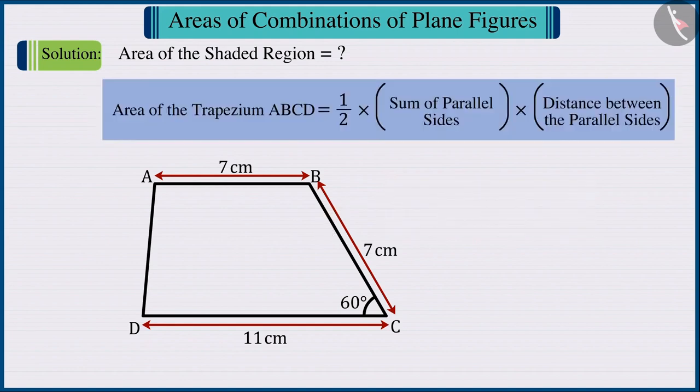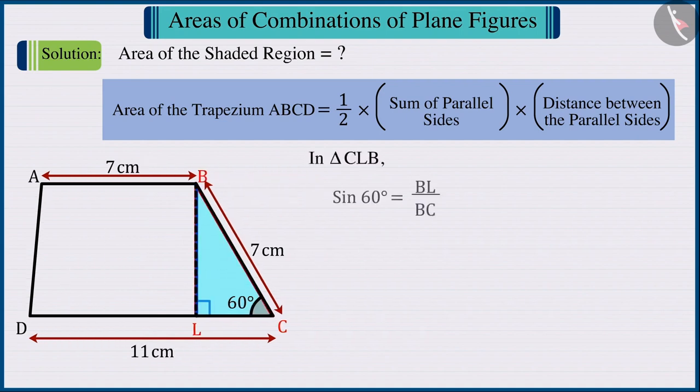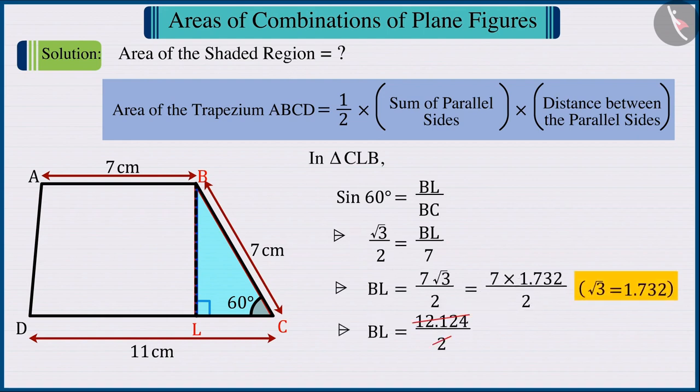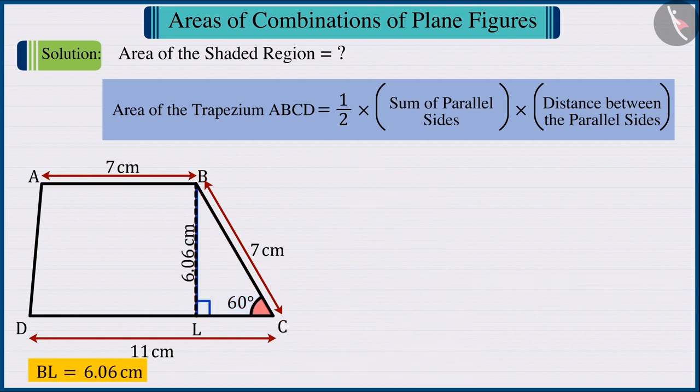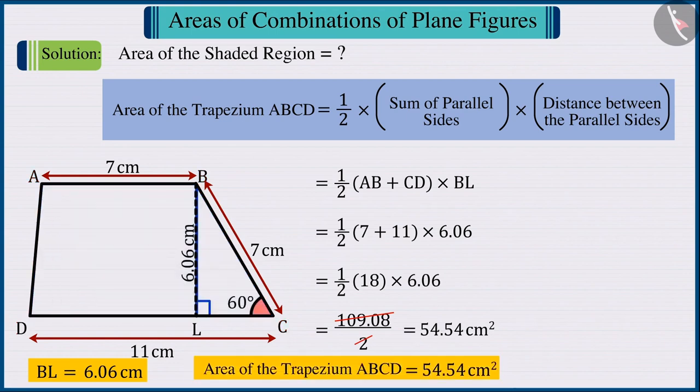From the formula for the area of a trapezium, we can see that we need the height of the trapezium. For this, we draw the perpendicular BL from point B on the side CD. Now, we get a triangle CLB where the angle at point C is 60 degrees. Hence, the height of the triangle CLB and the trapezium, that is, the measure of BL is obtained as 6.06 cm. Hence, substituting the values of AB, CD, and BL in the formula for the area of a trapezium and solving, we can find the area of trapezium ABCD which is 54.54 cm².